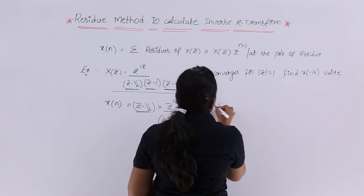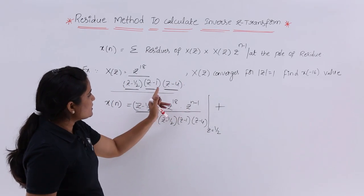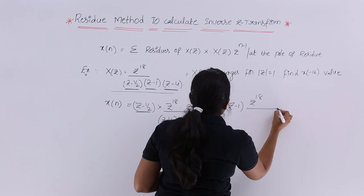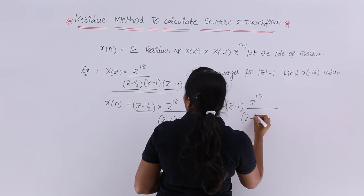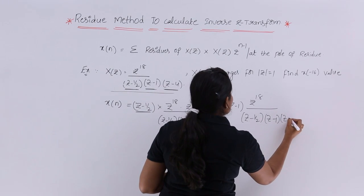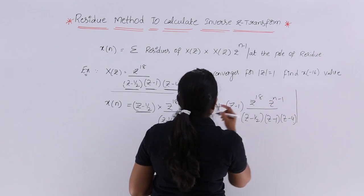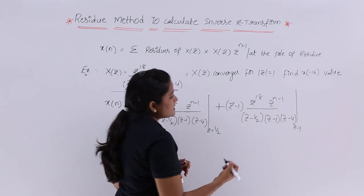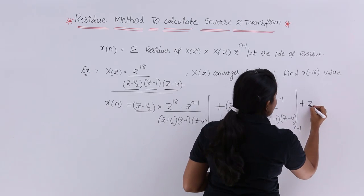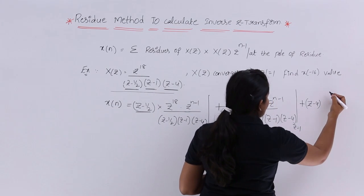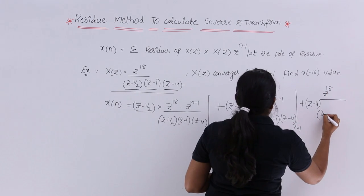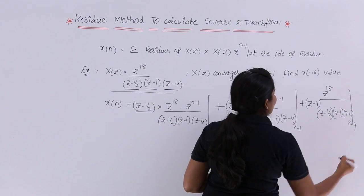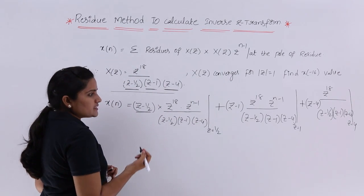Similarly, the second residue is (Z - 1) times X(Z) = Z^18 divided by (Z - 1/2)(Z - 1)(Z - 4), multiplied by Z^(N-1), evaluated at the pole Z = 1. The third residue is (Z - 4) times X(Z) = Z^18 divided by (Z - 1/2)(Z - 1)(Z - 4), multiplied by Z^(N-1), evaluated at the pole Z = 4.